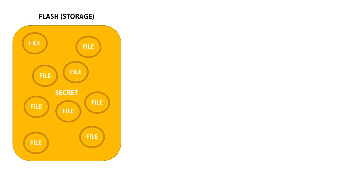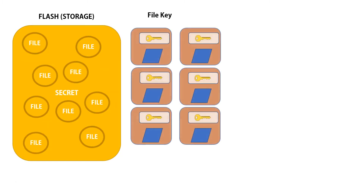If we look at a typical phone, there are hundreds of thousands of encrypted files. Every file is encrypted with its own unique file key, and every file key is encrypted with a class key and stored with metadata, which is then encrypted with the iOS key.